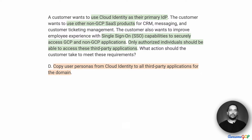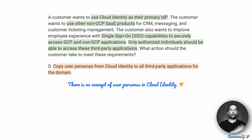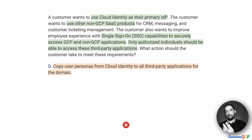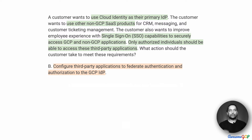Option D suggests: copy user personas from Cloud Identity to all third-party applications for the domain. Firstly, there is nothing called a user persona in Cloud Identity. And to copy that to all third-party applications — even if it existed — would add a lot of administrative overhead. So this is not a good option. All these options just aren't workable. Remember to learn about identity providers, what single sign-on is, and what Cloud Identity does for you when preparing for the certification. Let's use Option B to explore all of this.